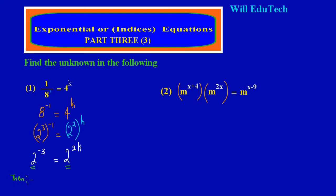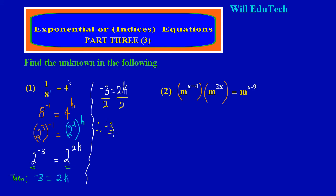Now we have the same base on both sides of our equation, so we can equate the powers. We have negative 3 equal to 2k. The 2 is multiplying k, so we do the opposite — divide through by 2. Therefore, negative 3 upon 2 equals k, which can also be written as k equals negative 3 upon 2. That's our answer for question 1.